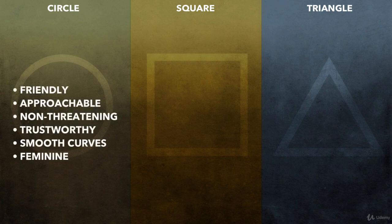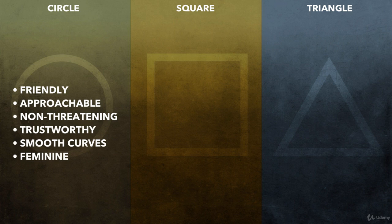Circles seem friendly and approachable. They are non-threatening and trustworthy. There are no sharp edges and everything has an easy smooth curve to it. Circles can also imply feminine.